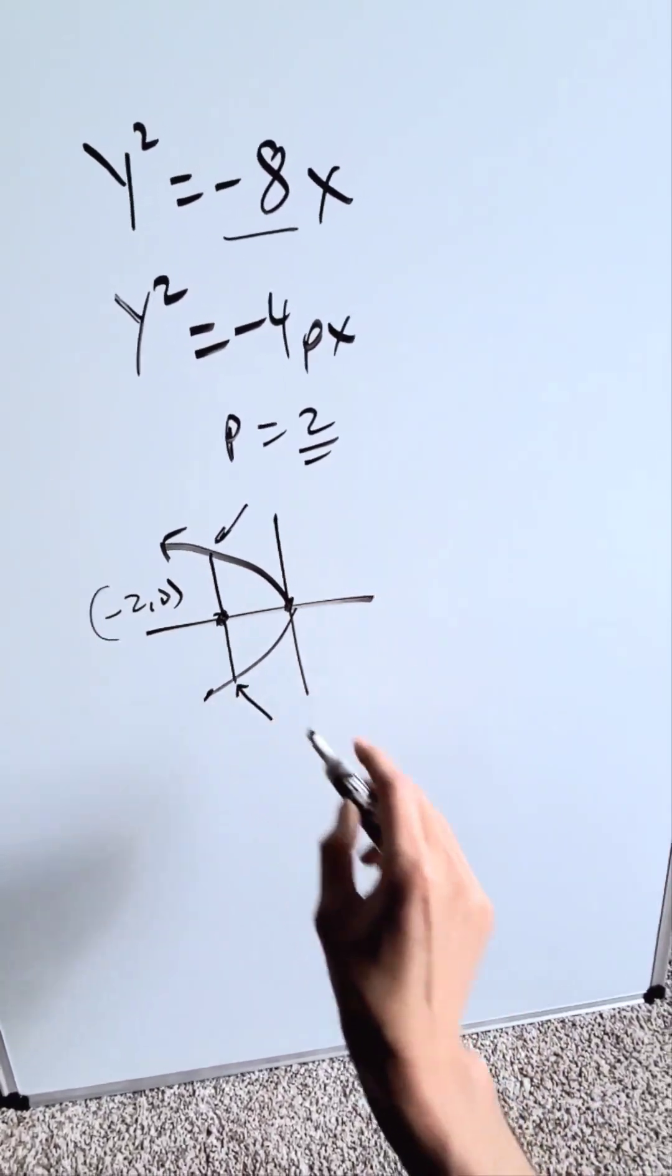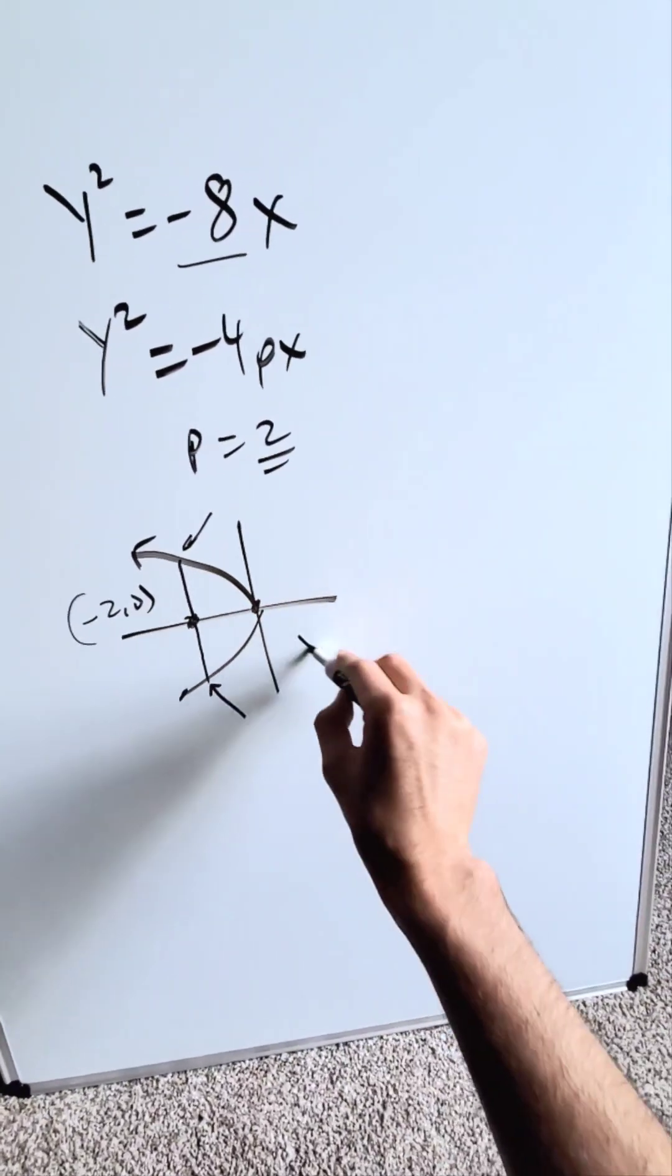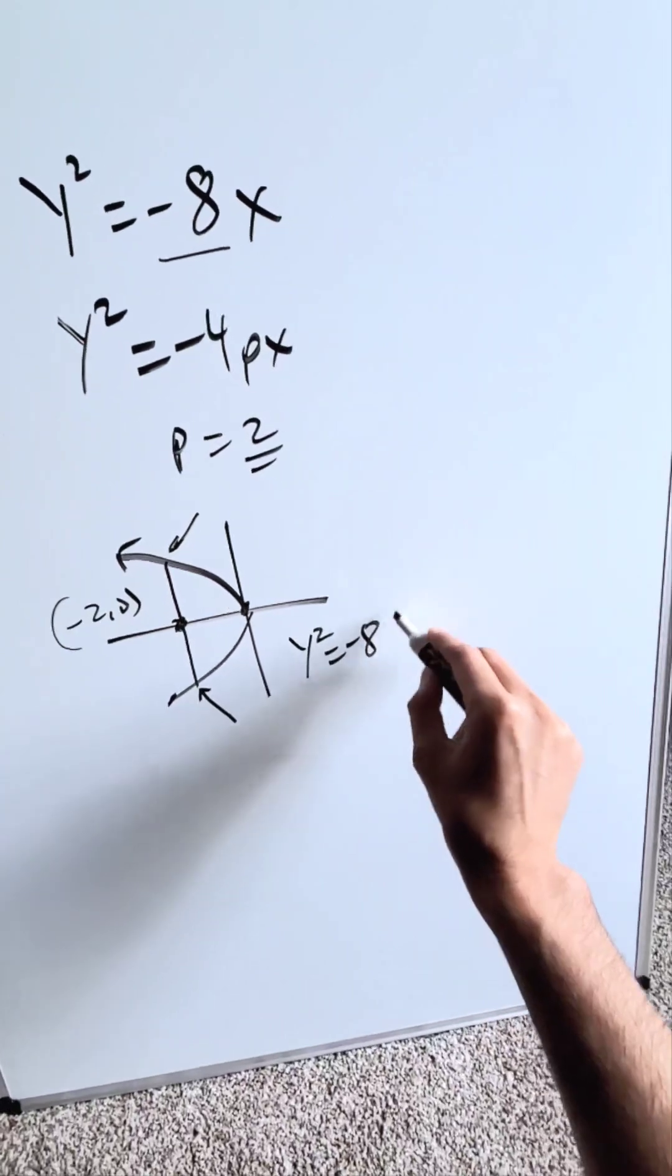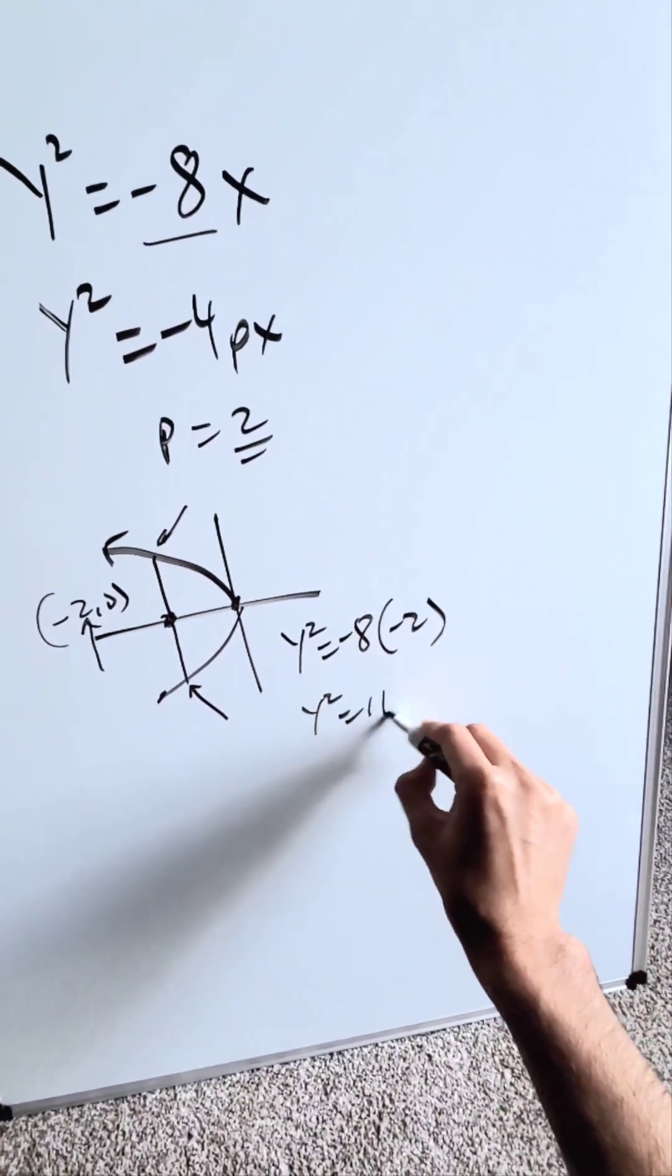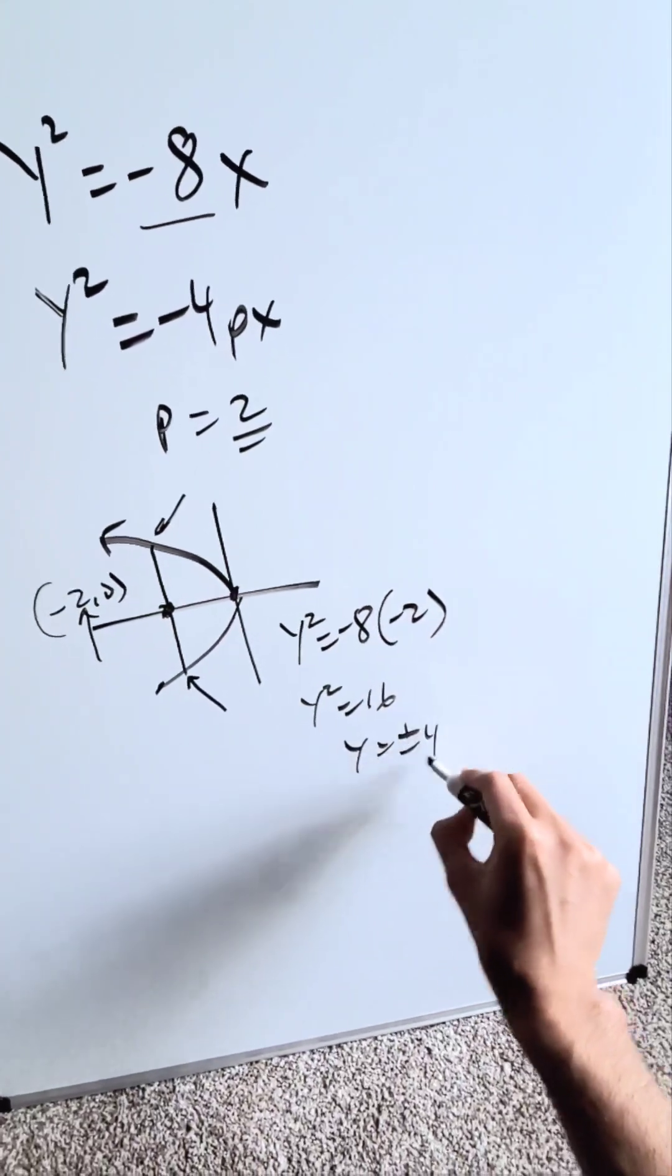What is the length of this segment? We can determine these endpoints. You have your y square is equal to minus 8. In place of x, put this, your focal point x value. You have y square is equal to 16, y is equal to plus and minus 4.